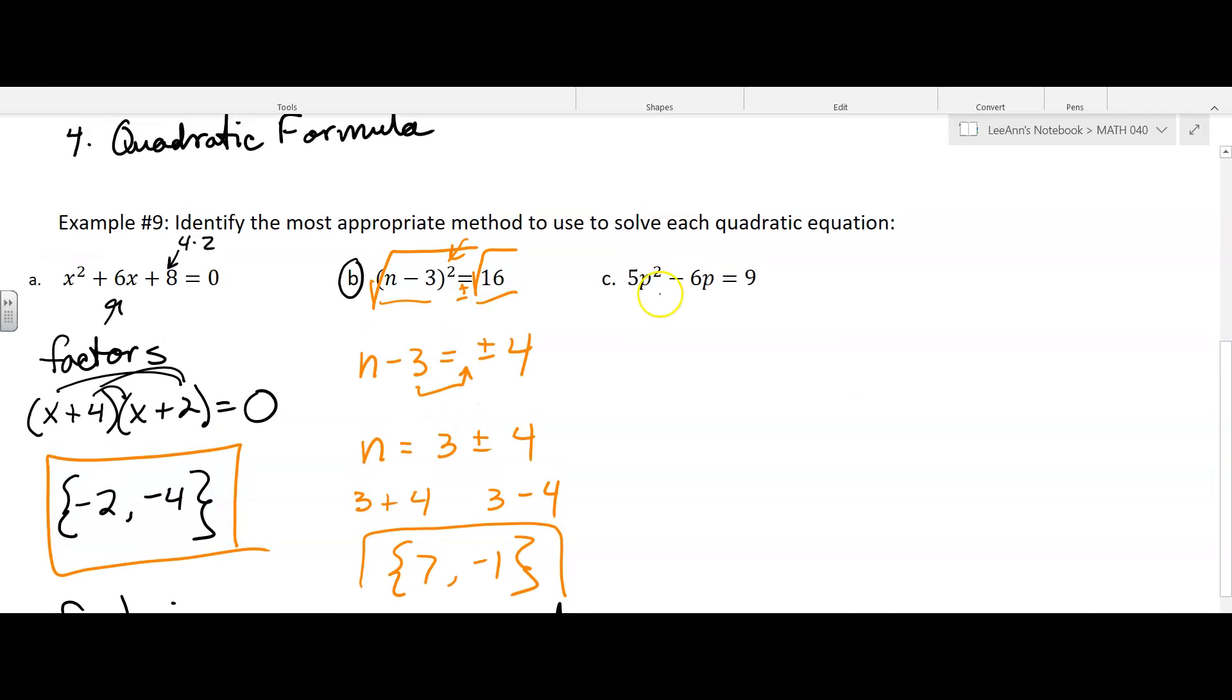you've got 5p squared minus 6p equals 9. It doesn't look factorable to me. Let's check. If I set it to 0, 5 times 9 is what? Negative 45. I don't think I'm going to get two numbers that multiply to be negative 45 and add to be negative 6.